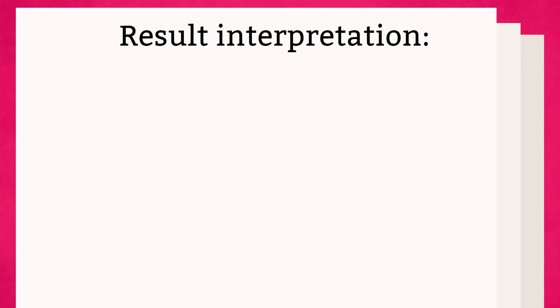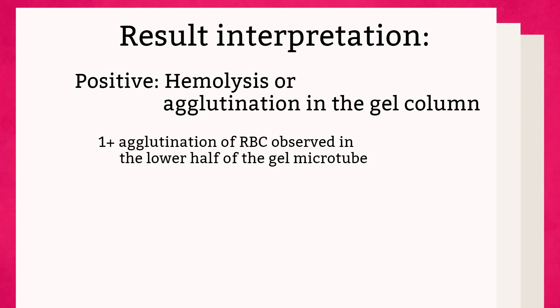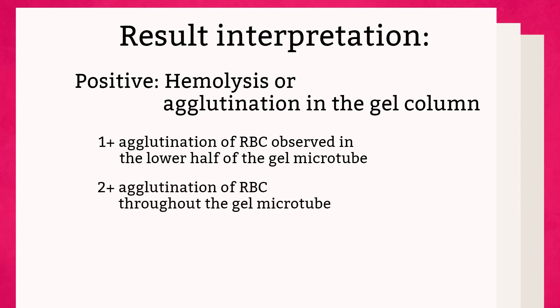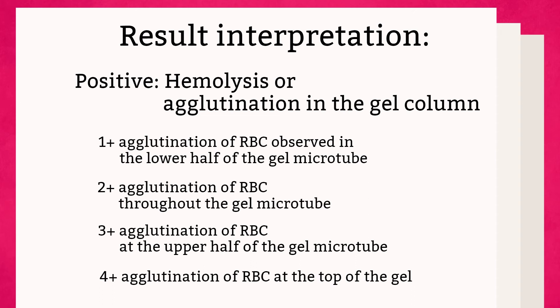Result interpretation. Positive is defined by hemolysis or agglutination in the gel card, which indicates the presence of an antibody. We grade positive results from 1+ to 4+. 1+ means agglutination of RBCs observed predominantly in the lower half of the gel microtube, with some unagglutinated red blood cells forming a button at the bottom. 2+ means agglutinated red blood cells are dispersed throughout the length of the gel microtube, with a few unagglutinated cells at the bottom. 3+ is when the majority of agglutinated red blood cells are trapped in the upper half of the gel microtube. 4+ is when you see a solid band of RBCs at the top of the gel, with a few agglutinates that may filter in but remain at the top.